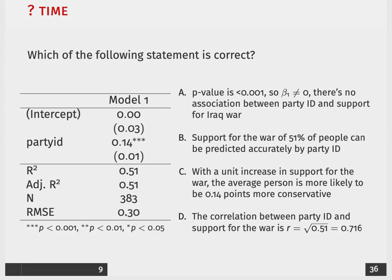And for A, the first part is true, the p-value is very low, and the second part is true, so beta 1 does not equal 0, but that means that there is some association between party ID and support for the Iraq war. And specifically, it's a positive association.